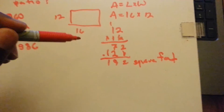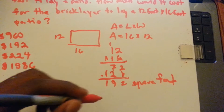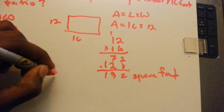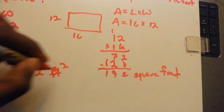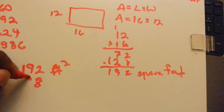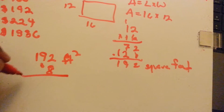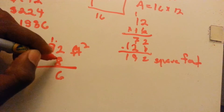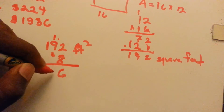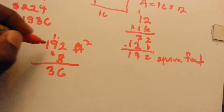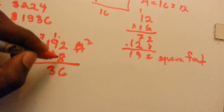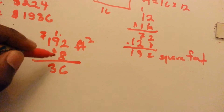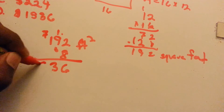And this guy charges $8 per square foot, so we have to take 192 feet squared times the $8 that he charges. That gives us 8 times 2 is 16, carry the 1. 8 times 9 is 72, plus 1 is 73. 8 times 1 is 8, plus the 7.